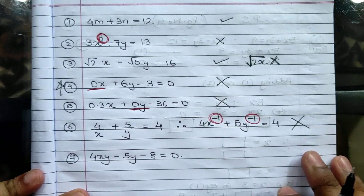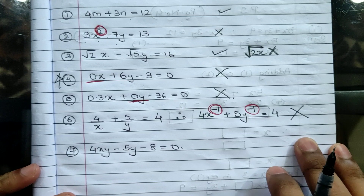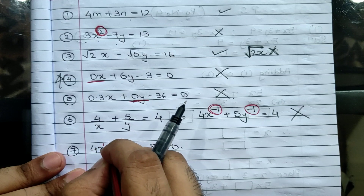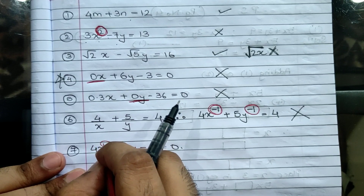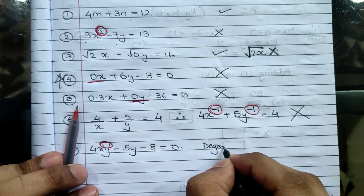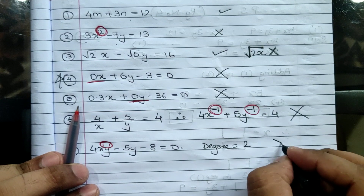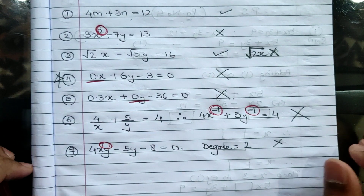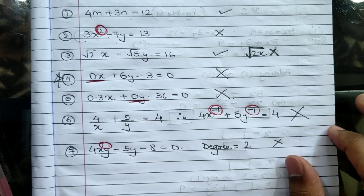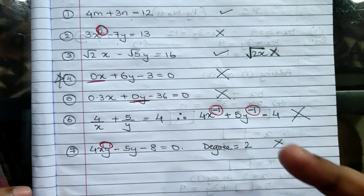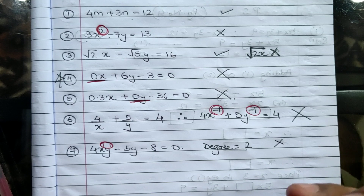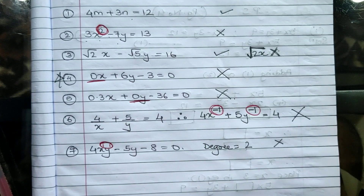Last one: 4xy − 5y − 8 = 0. Is this a linear equation in two variables? No — because in the term 4xy, x has degree 1 and y has degree 1, and when added together the degree becomes 2. So this is not a linear equation in two variables. I hope these basic concepts are clear. If you like this video, share it with your friends, watch it again for better understanding. Thank you, God bless y'all.